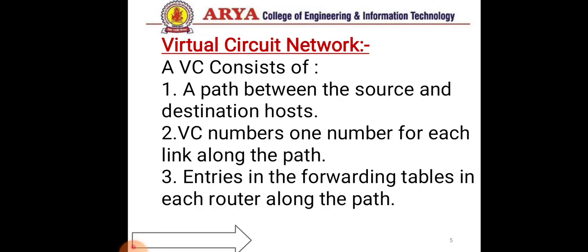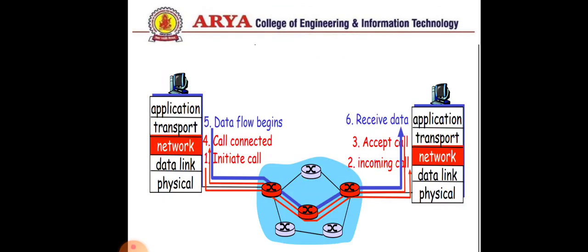As in a circuit-switched network, all packets follow the same path established during the connection. A virtual circuit consists of a path between the source and destination host, a virtual circuit number — one number for each link along the path — and entries in the forwarding table in each router along the path.